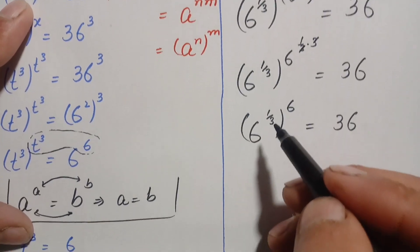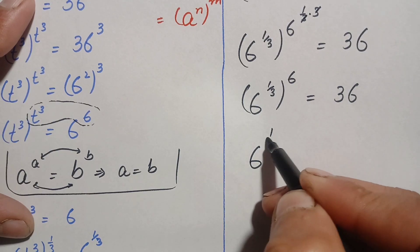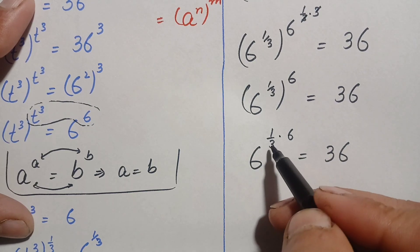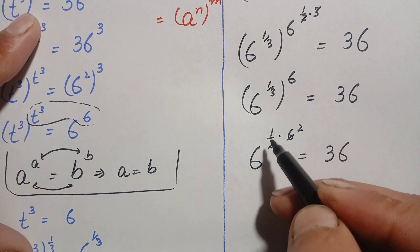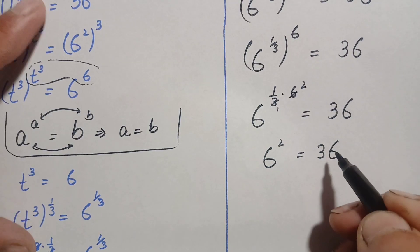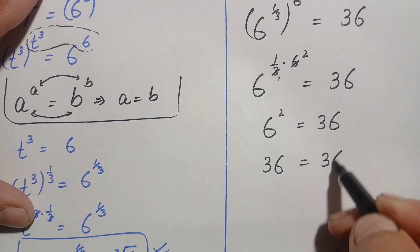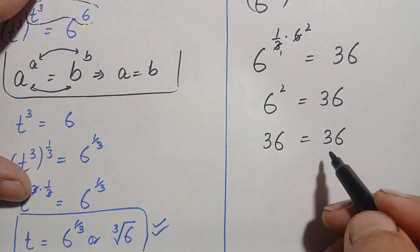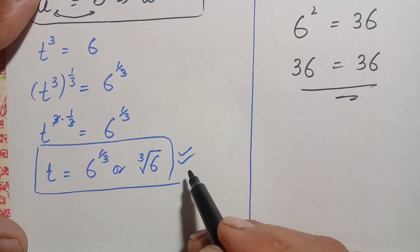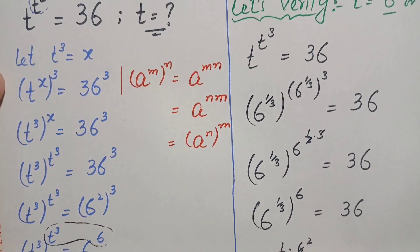Again on the left hand side we use the exponential identity and multiply 1 over 3 by 6. This gives 6 raised to power 1 over 3 times 6, equal to 36. Simplifying: 3 times 1 is 3 and 3 times 2 is 6, so this becomes 6 raised to power 2, equal to 36. Now 6 squared is 6 times 6, which is 36. So 36 equals 36 — both sides are equal, confirming that t equals 6 raised to power 1 over 3, or the cube root of 6, is the exact and correct value of t.